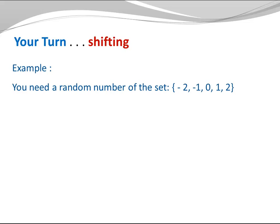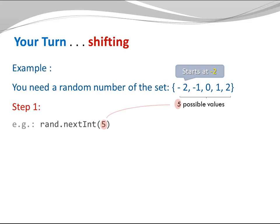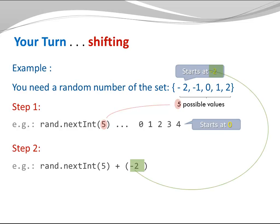Now it's your turn. Assume you need a random number of the set: minus 2, minus 1, 0, 1, or 2. Give yourself a moment to come up with the Java statement that produces a random number of the given set. Pause the video, and when you're ready, press continue. Here we're starting with minus 2, we have 5 possible values, so we call nextInt with argument 5. We get one of the values 0, 1, 2, 3, or 4, and we shift those values by adding minus 2. We can simplify and say: rand.nextInt(5) minus 2.